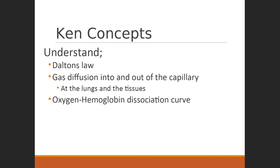In summary, it's important to understand gas exchange at both the lungs and the tissues, and how Dalton's Law applies. You need to understand how these gases are transported through the blood, and finally how the oxygen-hemoglobin dissociation curve reflects hemoglobin's ability to bind oxygen at the lungs and release it at the tissues.